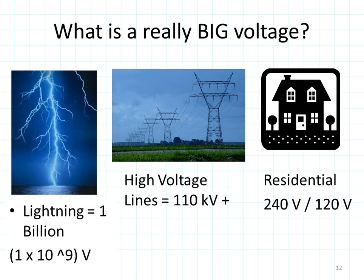Let's talk about some real stuff — what's a really big voltage and what's a really small voltage? The biggest voltage in nature is lightning; it's not uncommon for lightning to have 1 billion volts, that's 1×10⁹. High voltage lines are often 110 kilovolts or higher. Your house has 240 volts for large appliances and 120 volts for most general use.